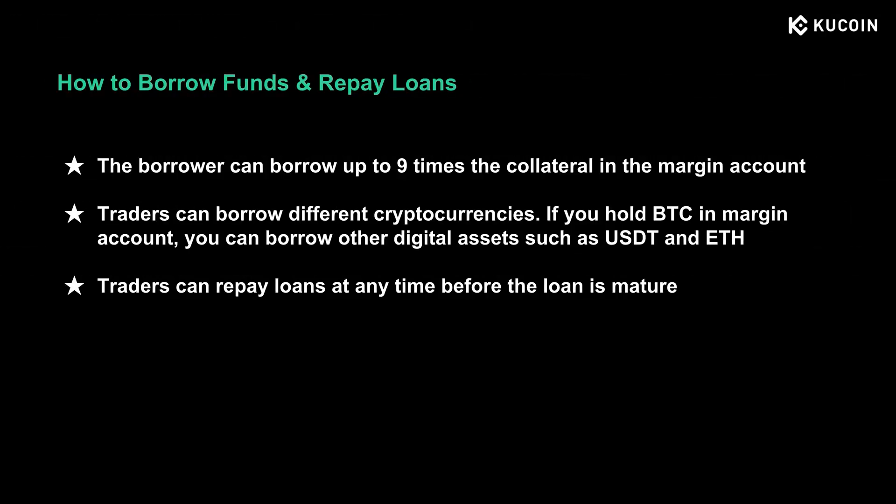We already know that margin trading allows us to leverage borrowed capital to amplify our profits. Traders can borrow up to nine times the collateral in the margin account. For instance, if I hold one USDT in a margin account, I can borrow up to nine USDT. We can also borrow different currencies — if I have BTC in the margin account, I can borrow other digital assets such as USDT and ETH.